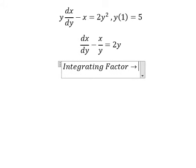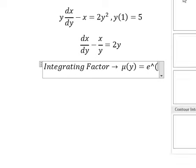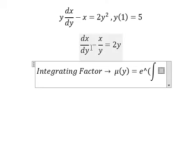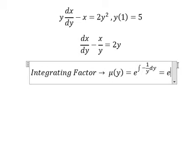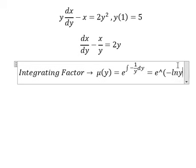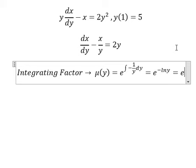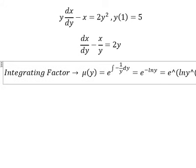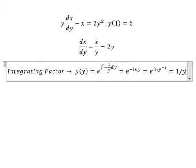So I will put mu of y equals e to the power of the integral. We see that negative one over y. This is the integrating factor. And we get negative ln y. So the negative goes inside the natural logarithm here.